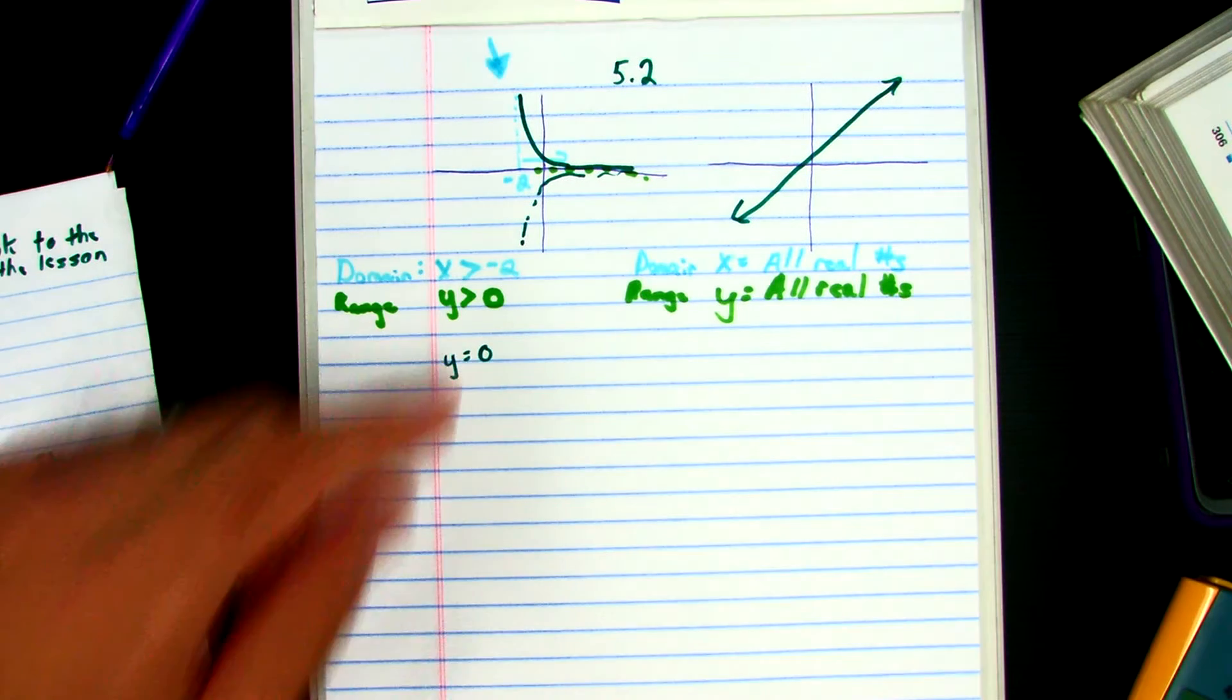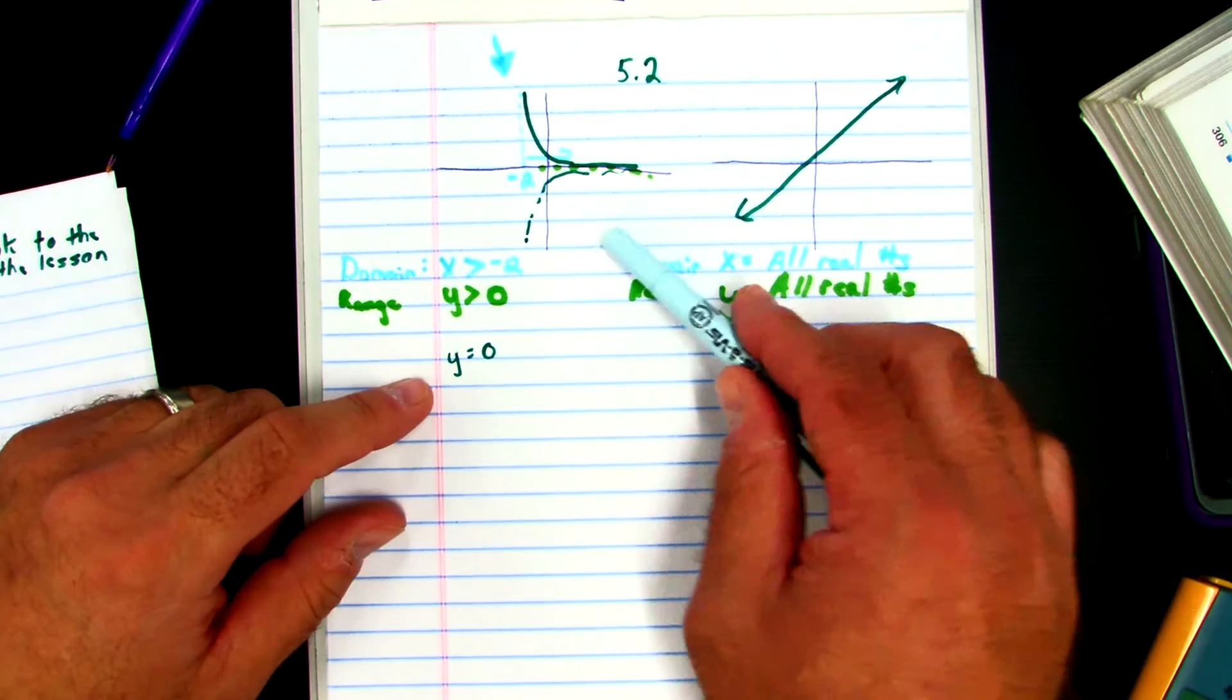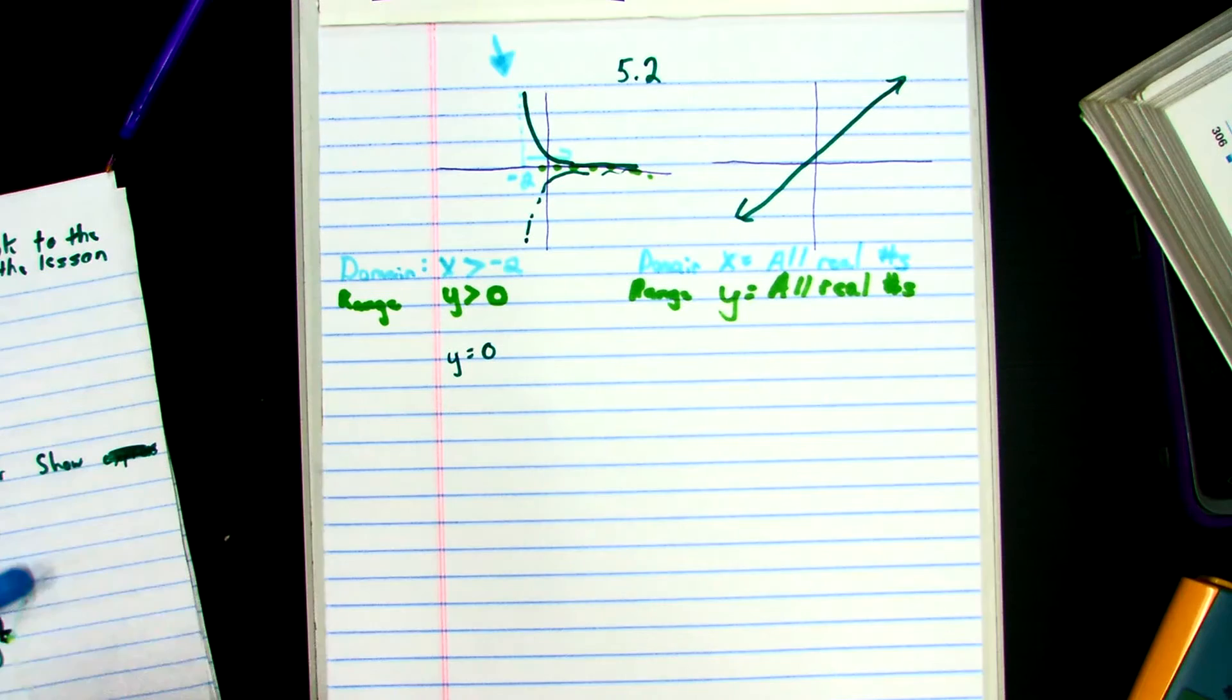Now this should look familiar because as we've moved on to 5.4, you'll know that Y equals 0 is the X axis, just like X equals 0 is the Y.